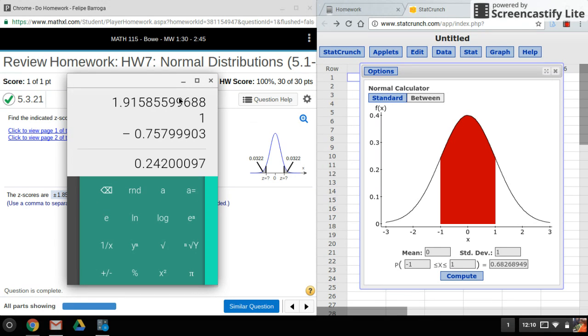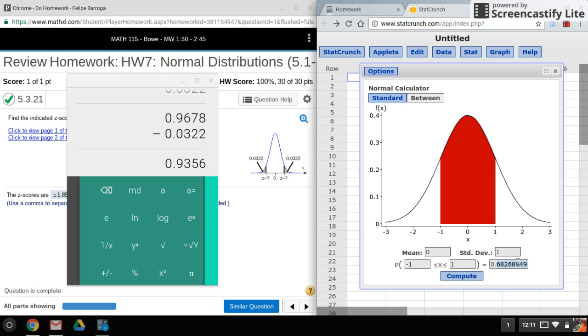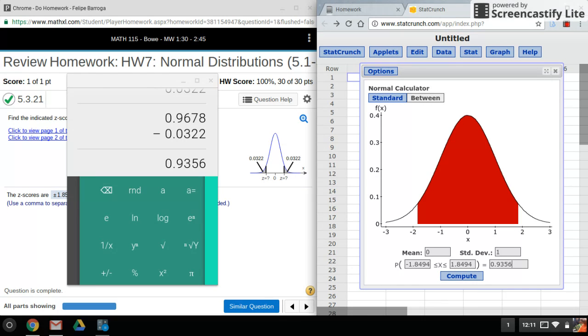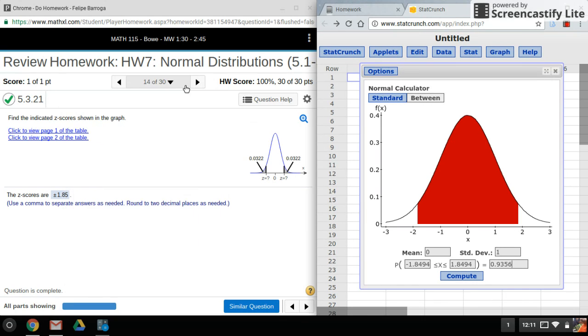I'll subtract these two values from one. Okay, so that's the area that I want to input here. Now click on compute, and there are my two z-scores.